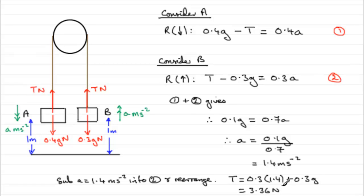So, when it comes to the first answer, the tension is 3.36 Newtons. And then in part B, we're asked for the acceleration, which is 1.4 meters per second per second.